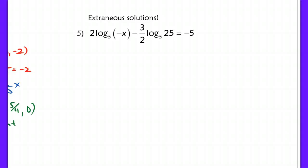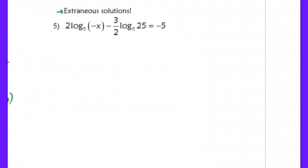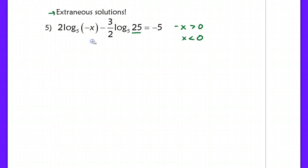In problem number 5, I want to show you where one of your solutions will not actually fit the original problem — these are called extraneous solutions. The input of 25 is already positive, so I focus on the other term: negative x must be greater than 0, which means x has to be less than 0. My final solution must be less than 0. Since I have logs on both sides, I'm going to condense them into a single logarithm.